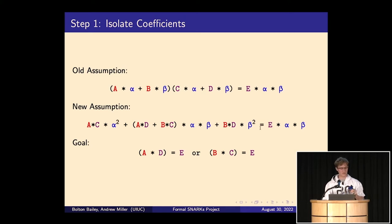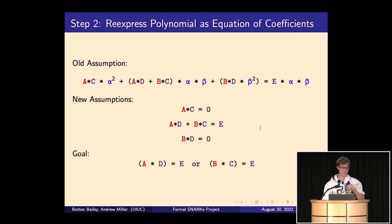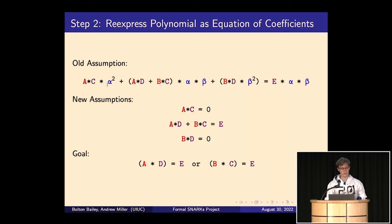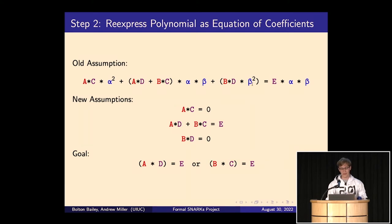Next, we reason about what it means for two polynomials to be equal — two polynomials are equal if their coefficients are equal for every monomial term. The alpha² coefficient gives us A*C = 0. The alpha*beta coefficient gives us A*D + B*C = E. And the beta² coefficient gives us B*D = 0. Those are our new assumptions.